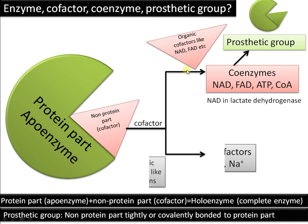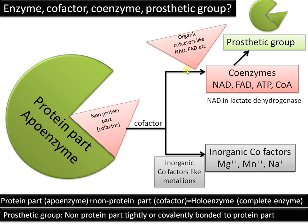Cofactors can also be metal ions such as Mg2+, Mn2+, Na+, etc. — for example, Mg2+ in hexokinase. So cofactors are of two types: organic cofactors generally called coenzymes, and metal ions. If the cofactor is tightly bound to the protein part, it is called a prosthetic group.